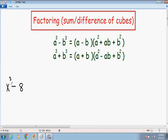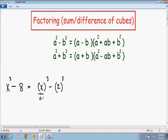Here we have x cubed minus 8. x cubed is certainly a perfect cube, and 8 is 2 cubed, so that's also a perfect cube — we can factor this using the difference of cubes method. I'm going to rewrite this as x cubed minus 2 cubed. You can imagine that x is our a and 2 is our b. Since there is a negative sign in between x cubed and 2 cubed, we use the first formula.